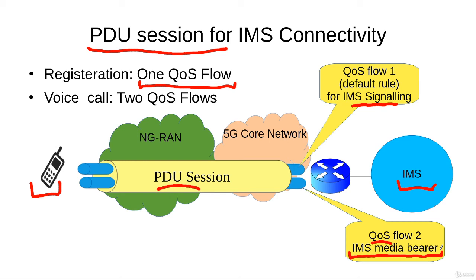The quality of service parameters of this second QoS flow depend upon the voice call — whether it is a high definition voice call or a standard definition voice call. According to the quality of the voice call, the parameters of this second QoS flow would be decided by the IMS system.